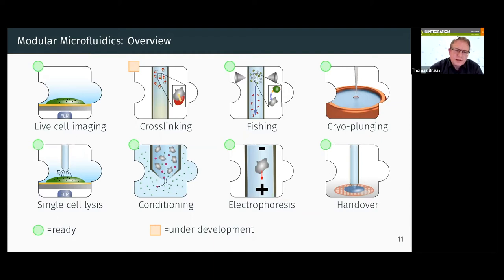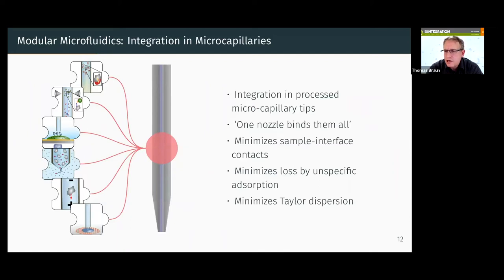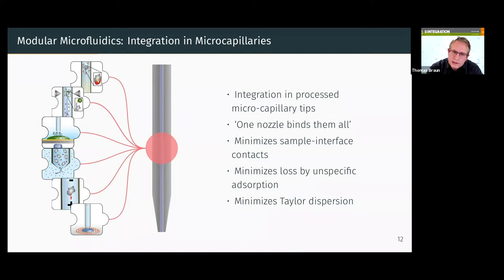Currently implemented modules include: live cell imaging, single cell lysis, conditioning where we can exchange buffers — all from very small volumes of a few nanoliters. We can fish out specific proteins using cognitive molecules like Fab fragments and antibodies. We can also do electrophoresis. We have the handover systems to prepare our EM grids. Importantly, all these modules are integrated in the same microcapillary tip — one nozzle which binds them all — giving minimal sample transport, minimizing Taylor dispersion and sample interface contacts.